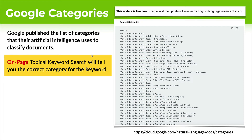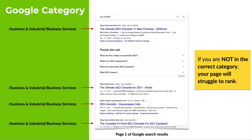I'm going to show you exactly what I'm talking about when I talk about Google categories. Google published a whole list of the categories that it recognizes. You can actually go here and see the natural language categories that Google recognizes. And Topical Keyword Search will tell you the correct category for your specific keyword. Google's artificial intelligence is now sorting the web and classifying documents in different categories. It's very important to know the correct category for your keywords. That's why we came up with Topical Keyword Search.